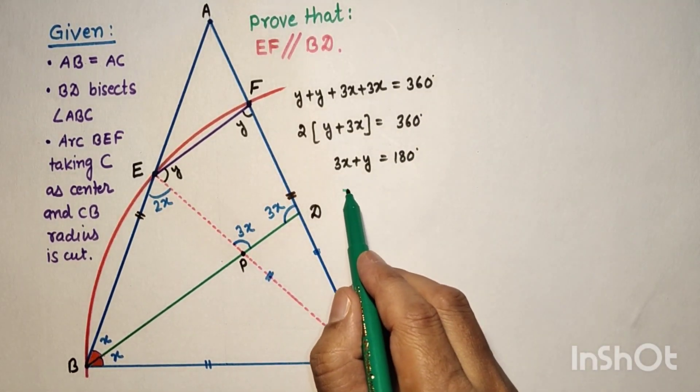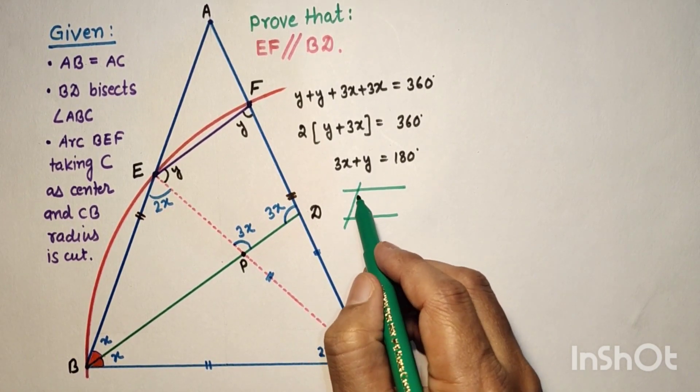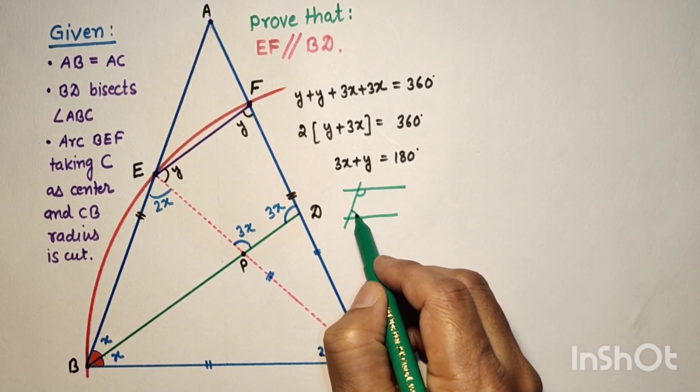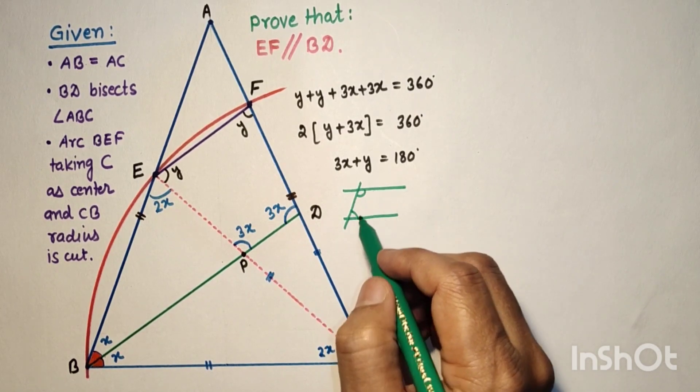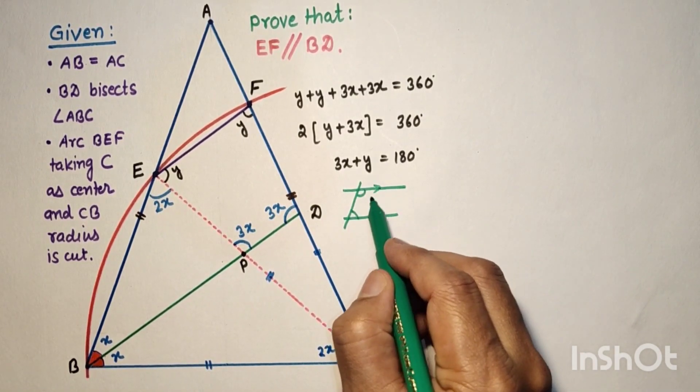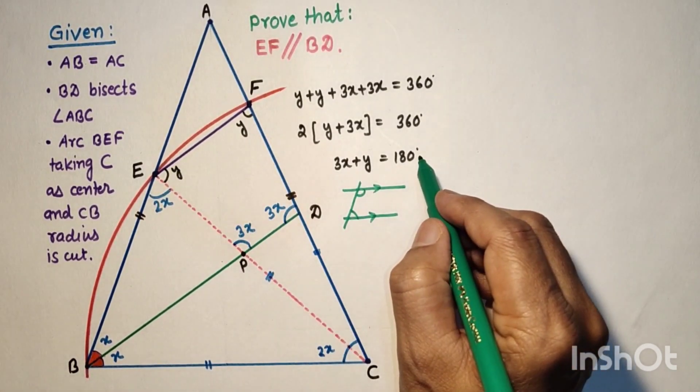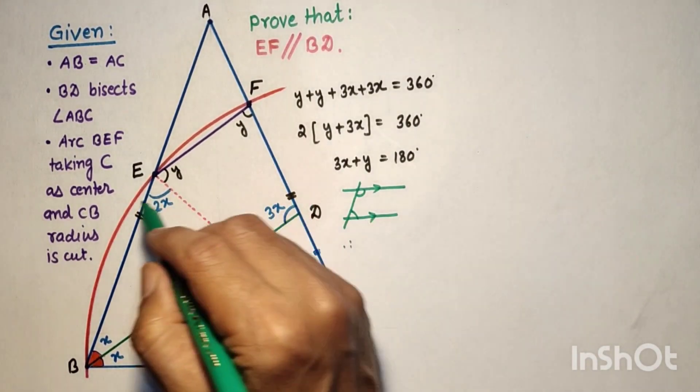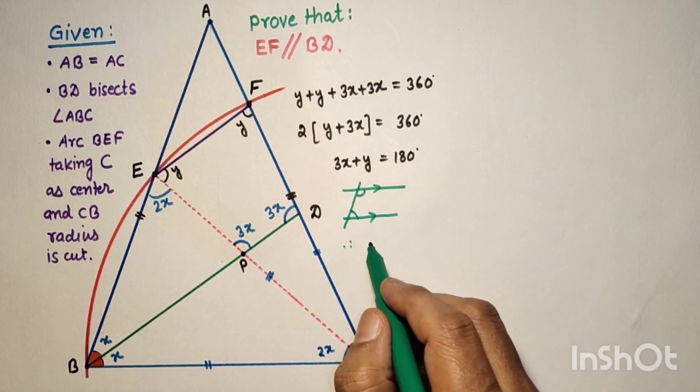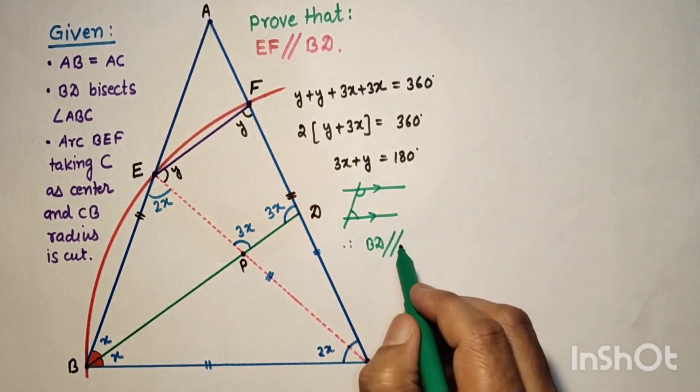If the sum of these two co-interior angles is 180, then definitely these two will be parallel. So here 3X plus Y equals 180, therefore PD is parallel to EF. So therefore BD is parallel to EF, and hence proved.